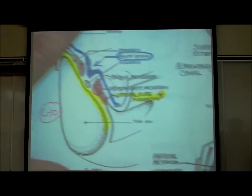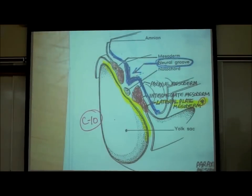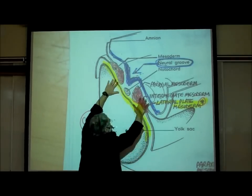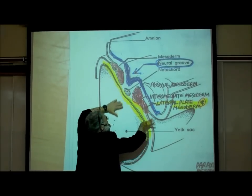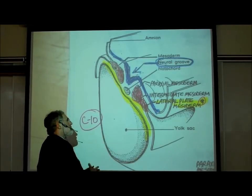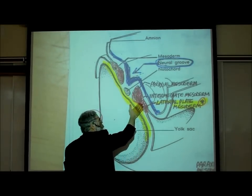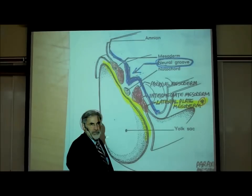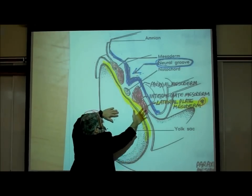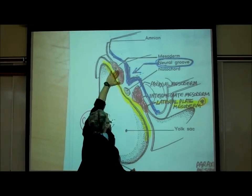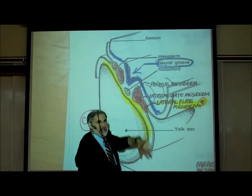Now what about the mesoderm? The first picture shows the mesoderm dividing and specializing into three parts: paraxial, intermediate, and lateral plate mesoderm. I've only labeled it on the right, but it's also found on the left. What does lateral mean? To the sides — so it's on the sides. Paraxial means around the midline. Intermediate is in between.